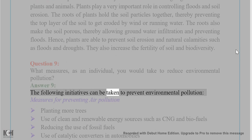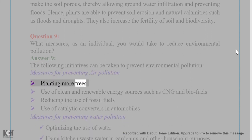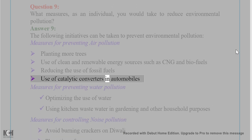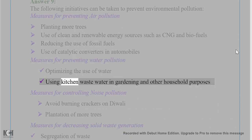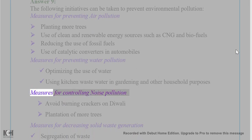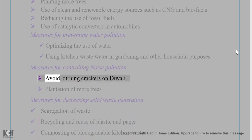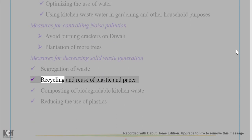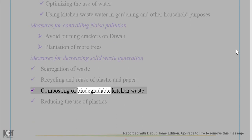Measures for preventing air pollution: planting more trees; use of clean and renewable energy sources such as CNG and biofuels; reducing the use of fossil fuels; use of catalytic converters in automobiles. Measures for preventing water pollution: optimizing the use of water, using kitchen waste water in gardening and other household purposes. Measures for controlling noise: avoid burning crackers on Diwali, plantation of more trees. Measures for decreasing solid waste generation: segregation of waste; recycling and reuse of plastic and paper; composting of biodegradable kitchen waste; reducing the use of plastics.